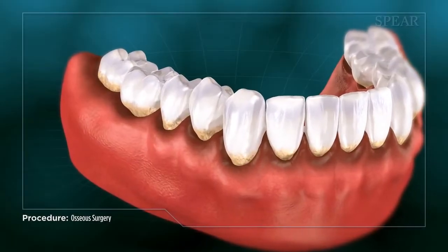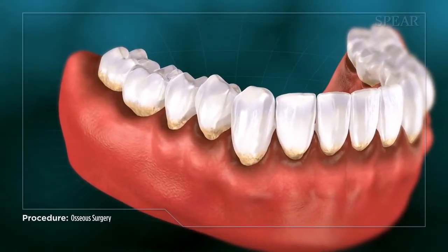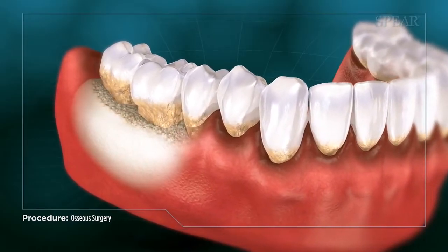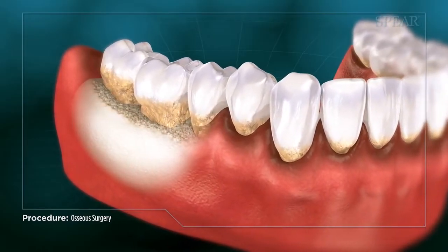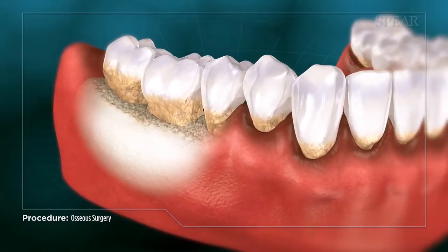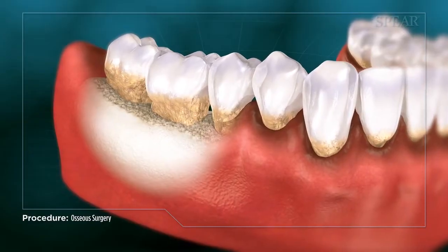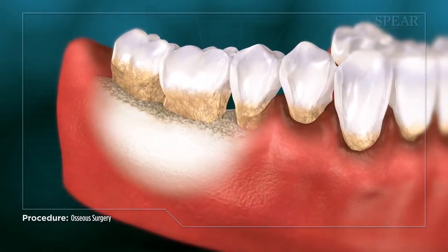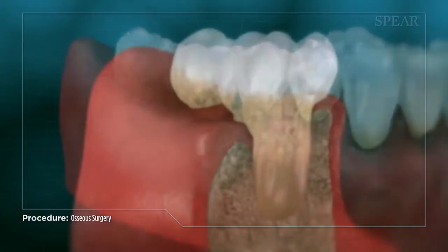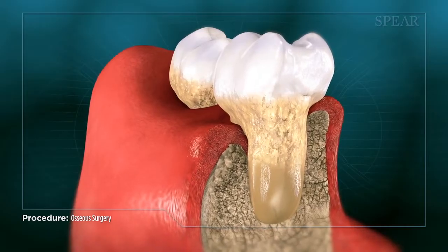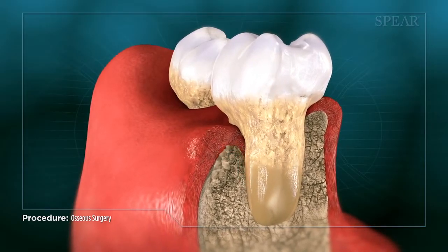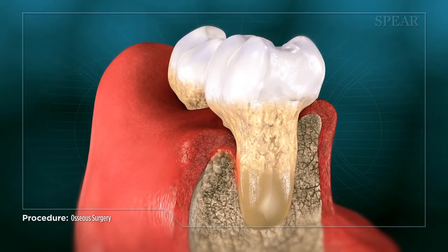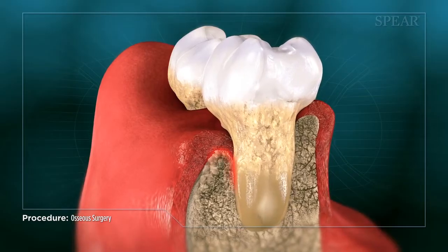When periodontitis has resulted in bone loss, it can form deep, uneven pockets around the teeth. Your doctor may recommend a procedure called osseous surgery to reduce the depth of these pockets and help bring the area back to health. These deep pockets accumulate harmful bacteria that can't be reached by normal cleaning, preventing the gums from ever healing on their own.